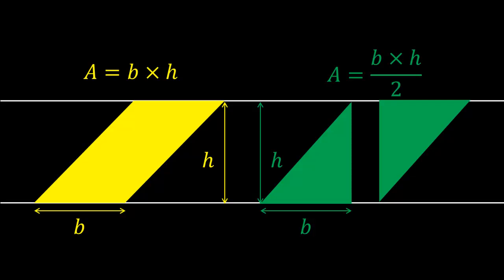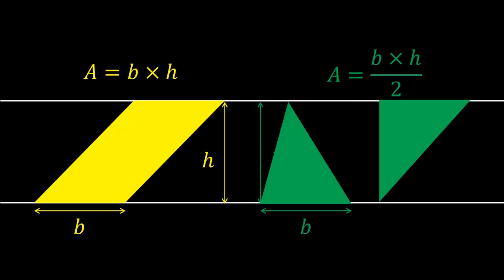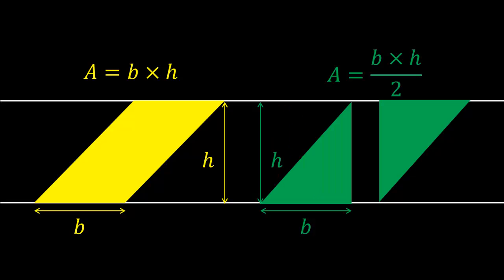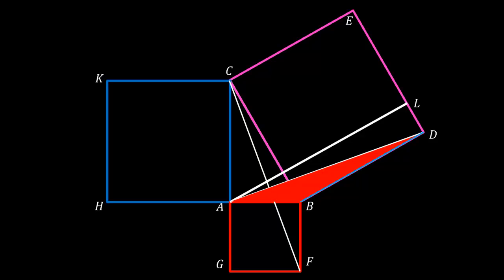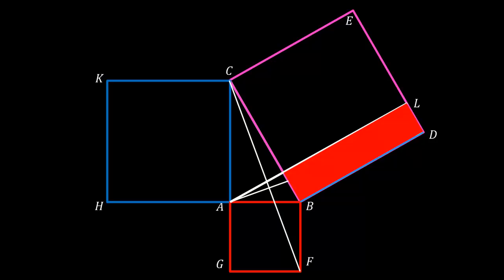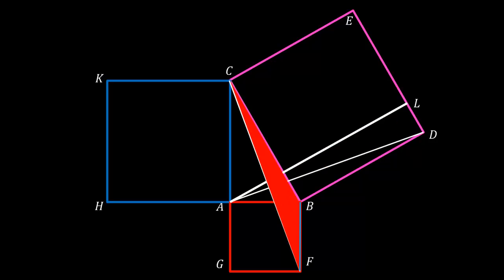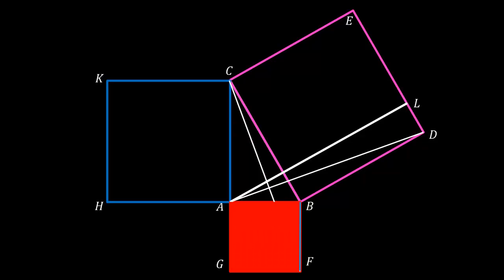Now consider this. The area of a parallelogram is base times height, and the area of a triangle is base times height over 2. That means that if a parallelogram and a triangle have the same base and height, the triangle has half the area of the parallelogram, no matter what the angles are. That means that the area of the triangle ABD is exactly half the area of the parallelogram BL, which shares the base BD. That also means that the area of the triangle BCF is half the area of the parallelogram BG, which shares the base BF.